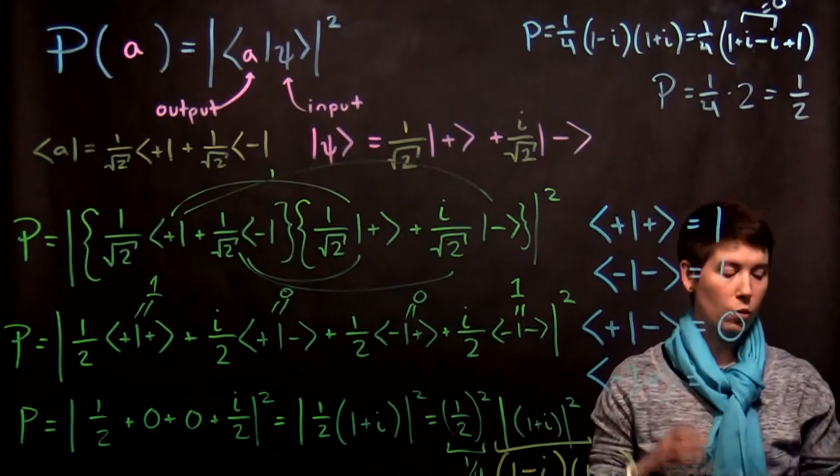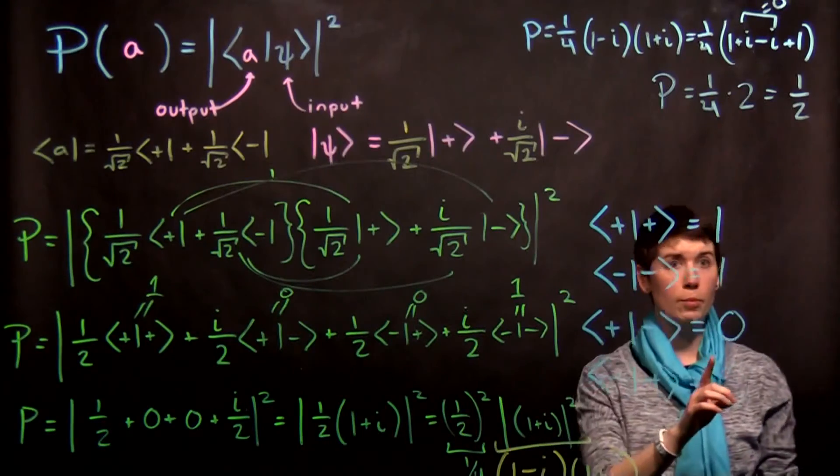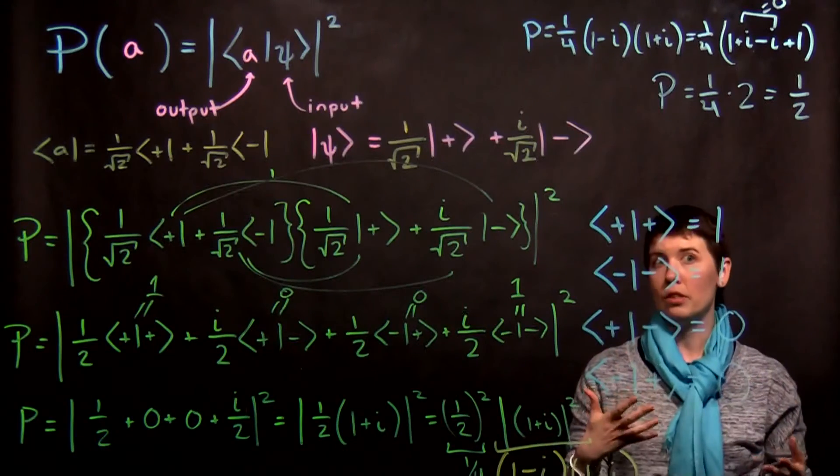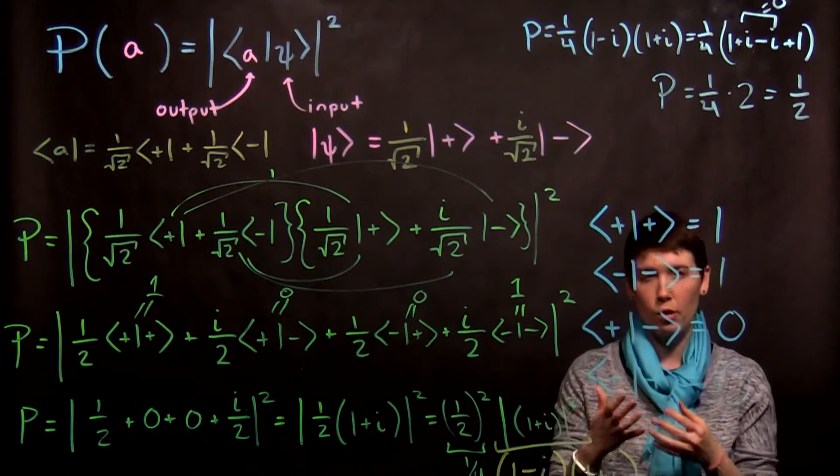So now, this is important to do a quick check. We expect our probability to be a real number between zero and one. We got one half. That's good. That's a real number between zero and one.